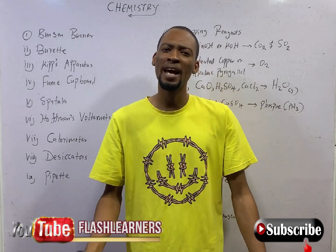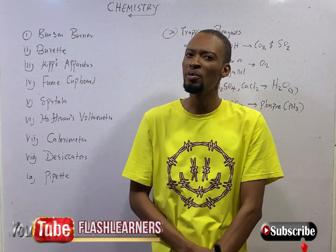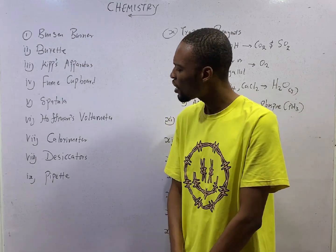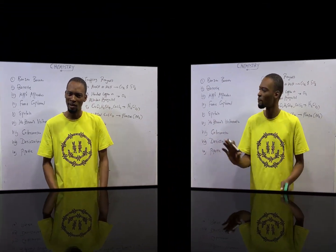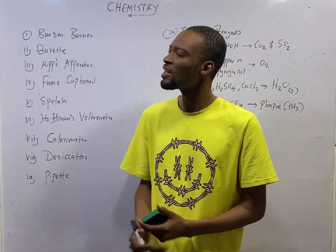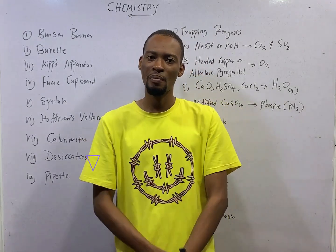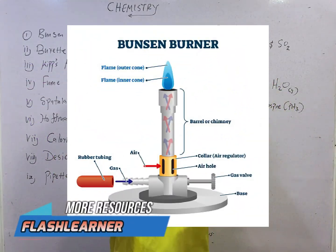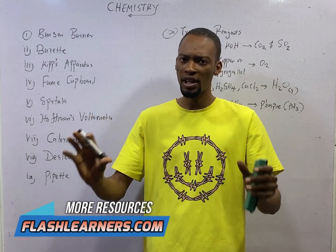Because you will be asked: what is the role of a fume cupboard? Then you will be wondering which topic this is from. So the first apparatus is the Bunsen burner. The Bunsen burner is used for heating and for exposing items to flames.